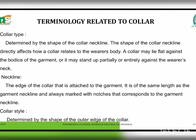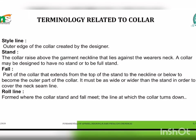Next, collar style is determined by the shape of the outer edge of the collar. The style line is the outer edge of the collar created by the designer. The collar stand is the part of the collar that rises above the garment neckline and lies against the wearer's neck. A collar may be designed to have no stand or to be a full stand. Next, the fall is the part of the collar that extends from the top of the stand to the neckline or below, becoming the outer part of the collar. It must be as wide or wider than the stand to cover the neck seam line. Next, the roll line is formed where the collar stand and the fall meet — the line at which the collar turns down.